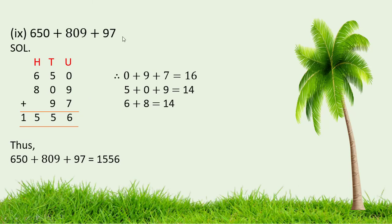In the ninth part of Question No. 1: 650 plus 809 plus 97. 0 plus 9 plus 7 is 16; write 6 here and 1 is the carry. 5 plus 0 plus 9 is 14; add the carry to get 15. Write 5 here and 1 is the carry. 6 plus 8 is 14; add the carry to get 15. Thus, 650 plus 809 plus 97 is 1556.